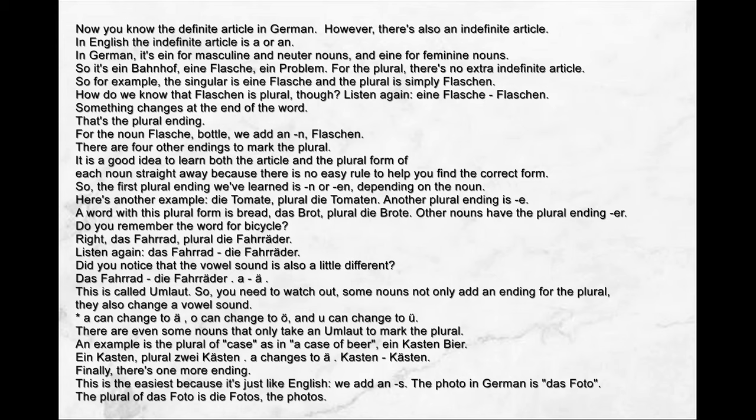There are even some nouns that only take an umlaut to mark the plural. An example is the plural of 'case' — as in 'a case of beer': 'ein Kasten Bier'. 'Ein Kasten' — plural: 'Zwei Kästen'. A changes to Ä.